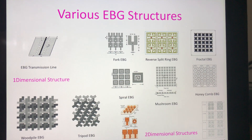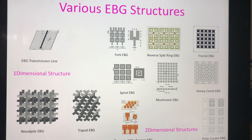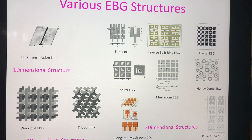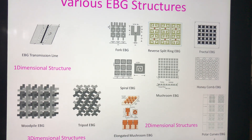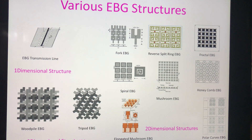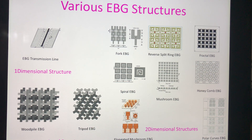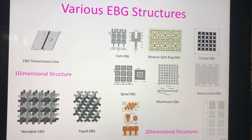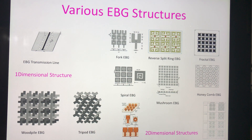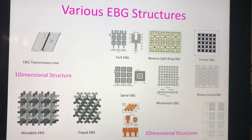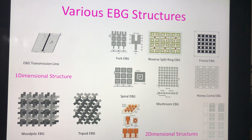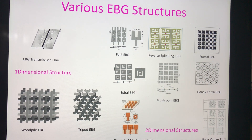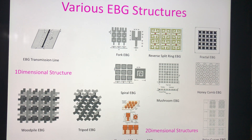There are various configurations of EBG structures: one-dimensional, two-dimensional, or three-dimensional. The basic one-dimensional structure is the EBG transmission line — a line over a substrate with periodic patches or holes. In two-dimensional structures, there is a ground plane, over which a substrate material is placed, and above that, metallic patches of different shapes are fabricated.